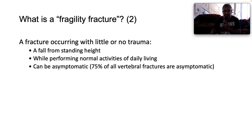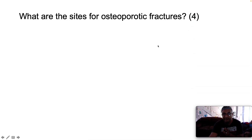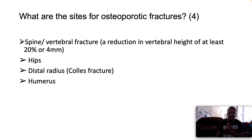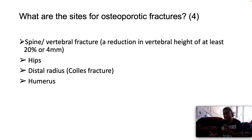What are the sites for osteoporotic fractures? Well, spine or vertebral fractures — you detect these if there is a reduction in vertebral height of at least 20% or four millimeters. Osteoporotic fractures also affect the hips, the distal radius — often via the mechanism of falling on an outstretched arm, which we call a Colles' fracture — and the humerus as well.